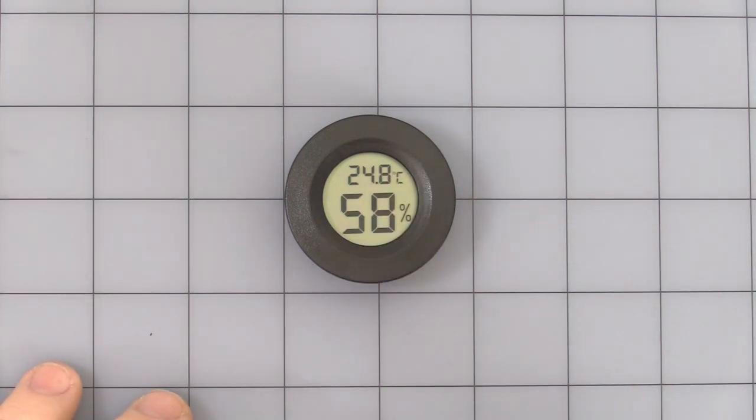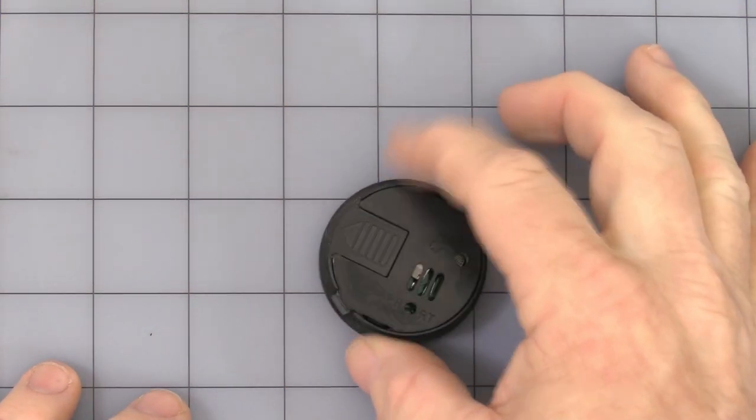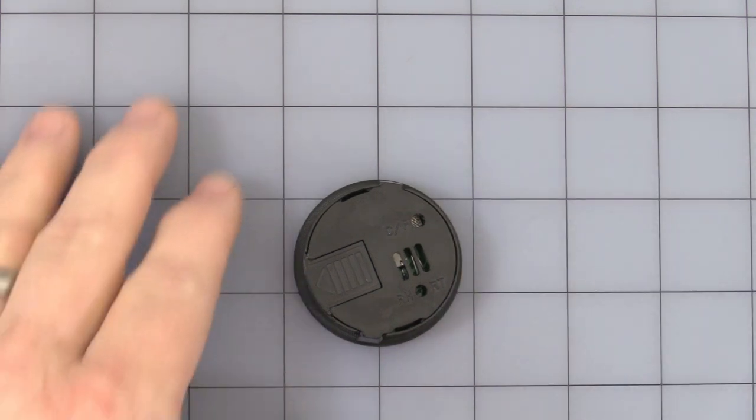Now when it comes, it automatically comes set in Celsius. If you need to change that, on the back you'll see a small hole that says C and F.